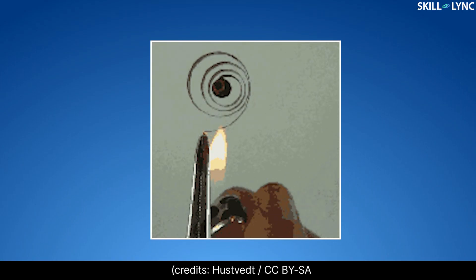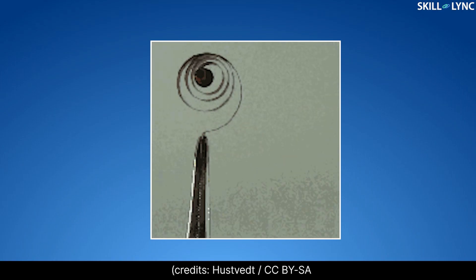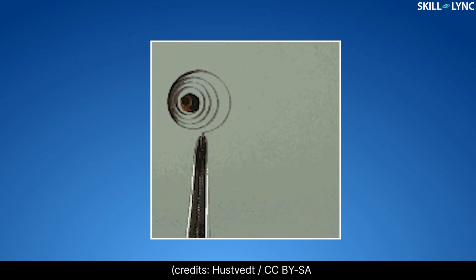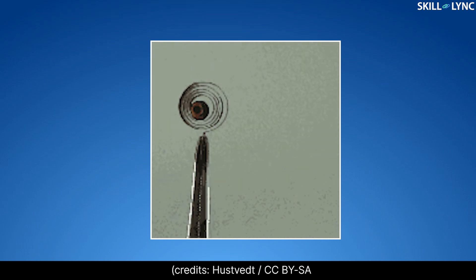The use of bimetallic strips can be seen in thermostats where it is used to control the temperature or watches where it is used to compensate for the expansion of balanced spring.